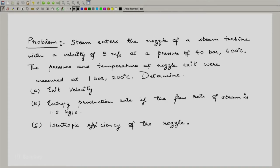You have to determine the exit velocity, the entropy production rate if the flow rate of steam is 1.5 kilograms per second and the isentropic efficiency of the nozzle. So, let us begin.